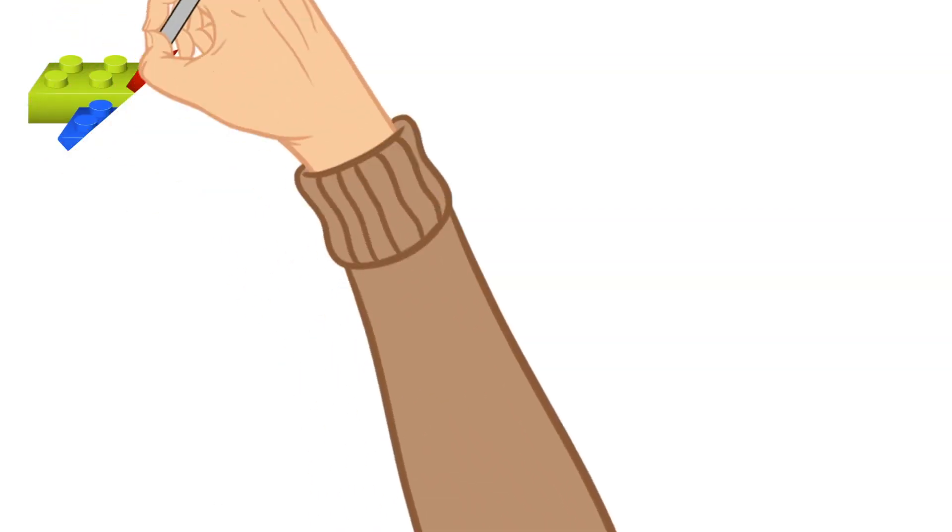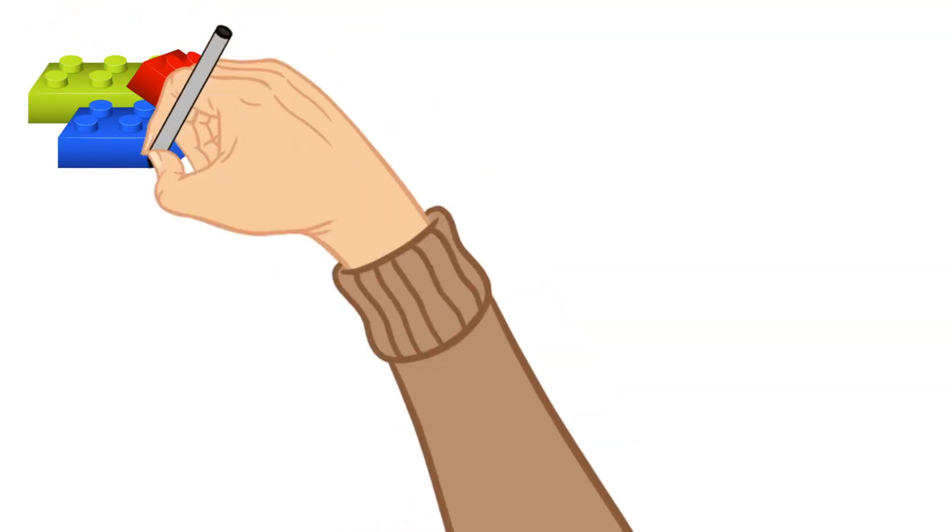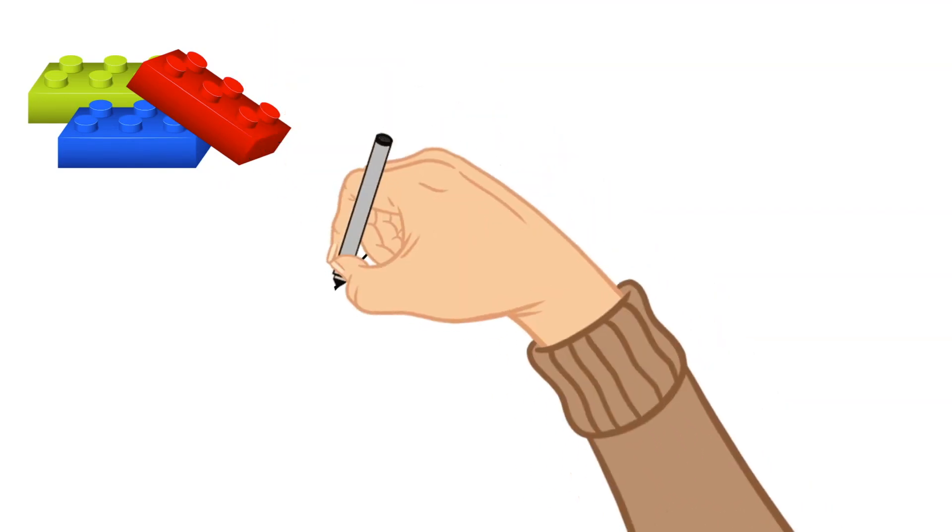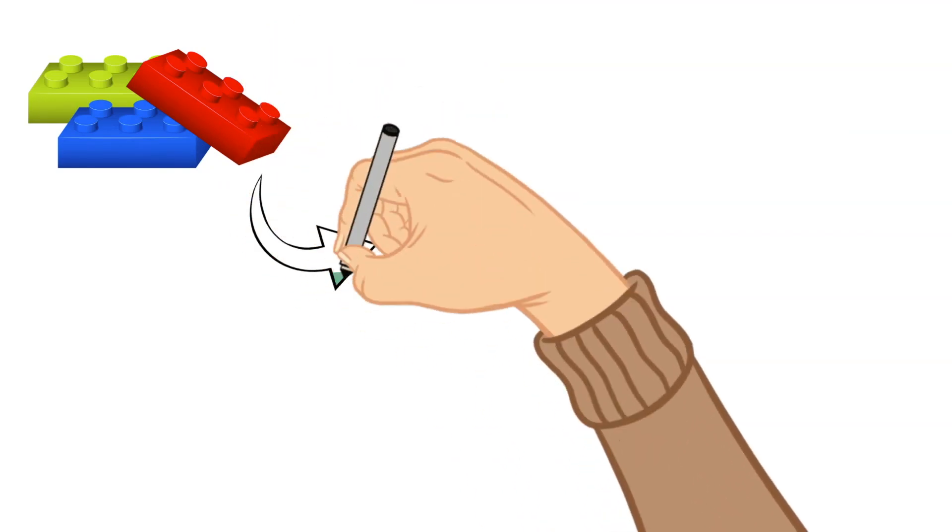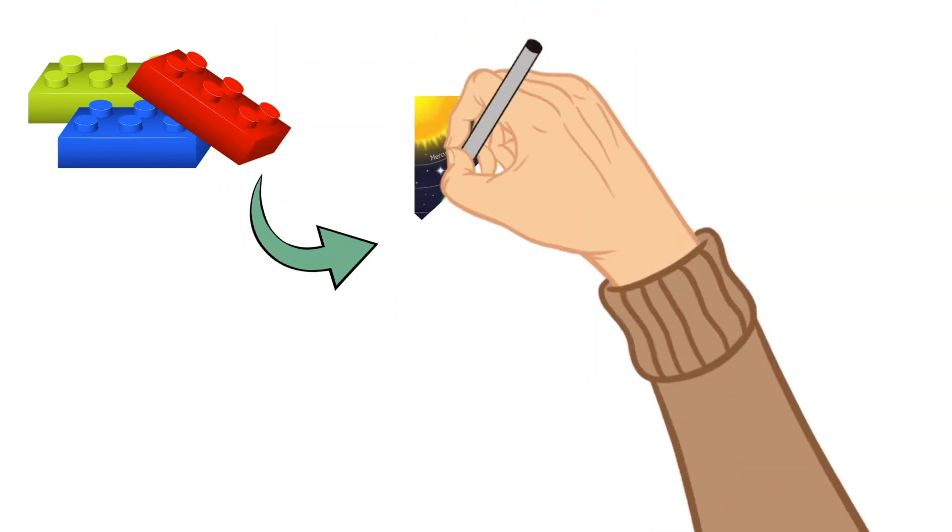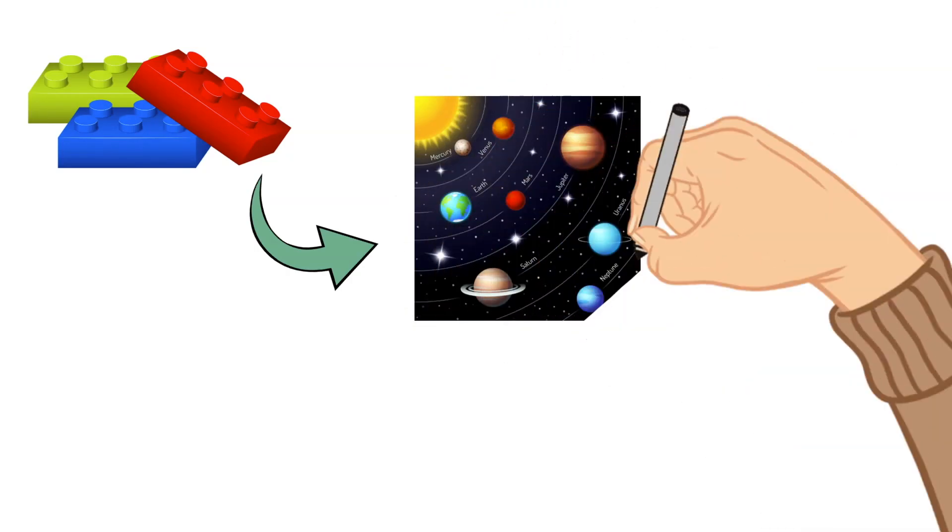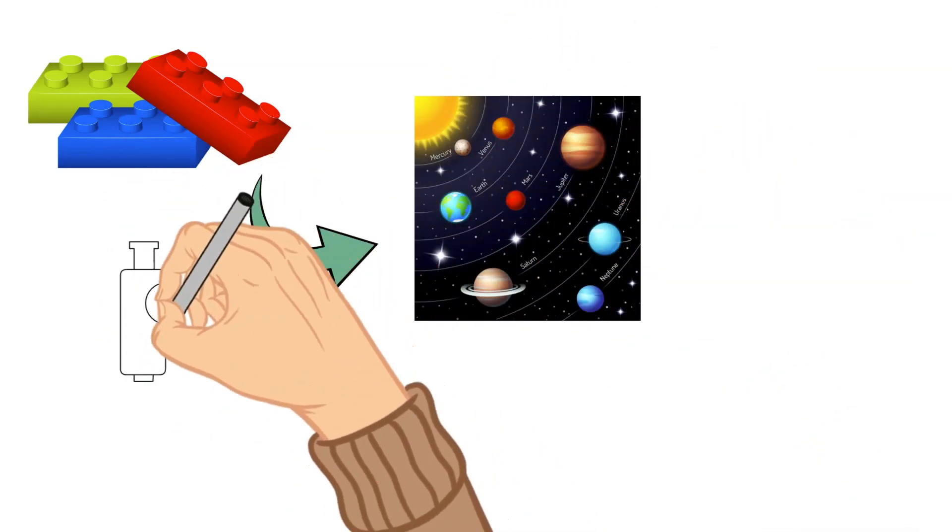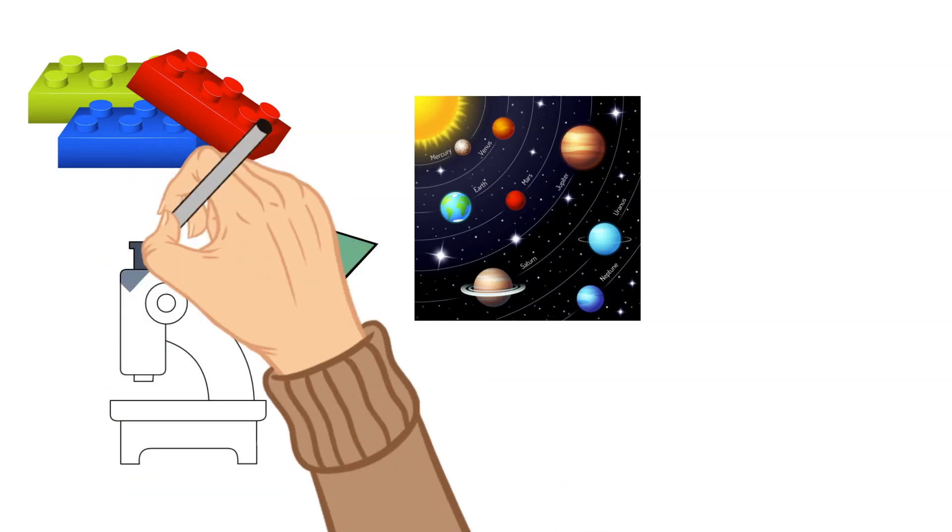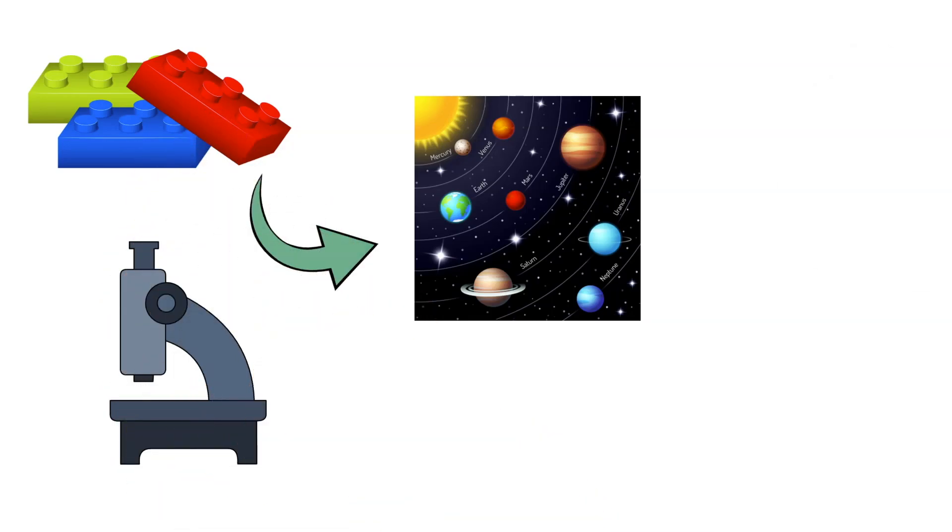Today we are going to be talking about some parts of an atom. The atom is the basic building block for all matter in the universe. Atoms are extremely small and are made up of a few even smaller particles.